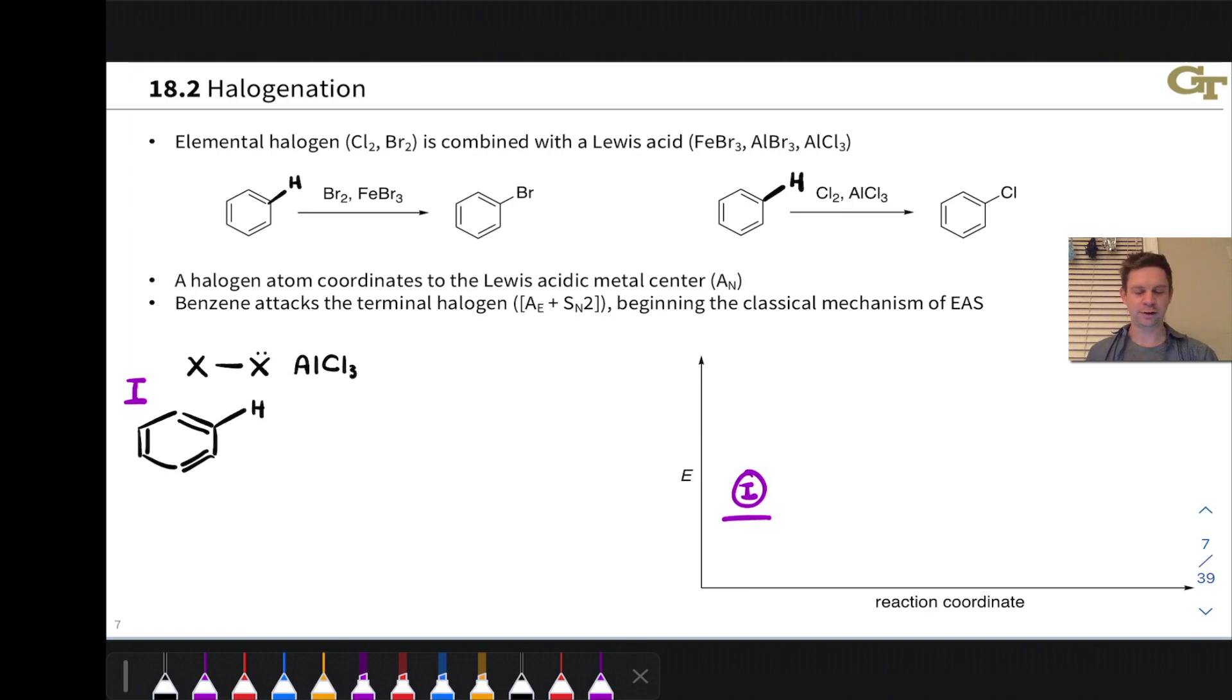So in a typical halogenation reaction, an elemental halogen, Br2 in the left-hand example and Cl2 in the right-hand example, is combined with the aromatic and a Lewis acid catalyst. Two examples are shown on the slide: FeBr3, iron-3 bromide, and AlCl3, aluminum trichloride. Either of these can be used actually in either case.